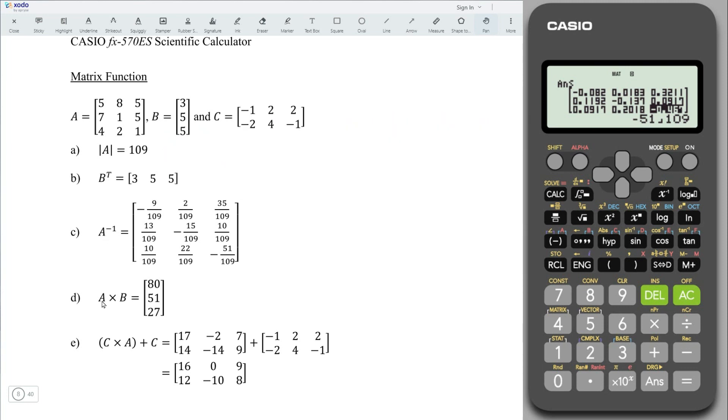For part D, the matrix A multiply matrix B. Press on shift 4, select matrix A, 3, times shift 4, select matrix B, 4. Press equal. And we obtain the correct answer.